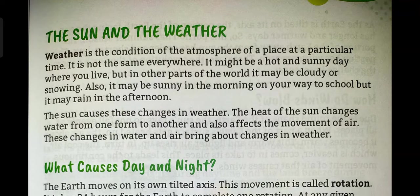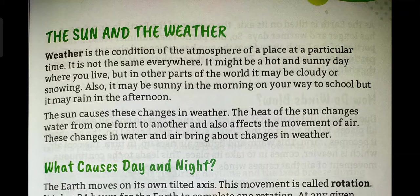Next, the sun and the weather. What is the relation between the sun and the weather? Weather is the day-to-day condition of any place. Weather condition is different from one place to another. For example, today it may be very sunny here, but in another place it may be cloudy or rainy weather.